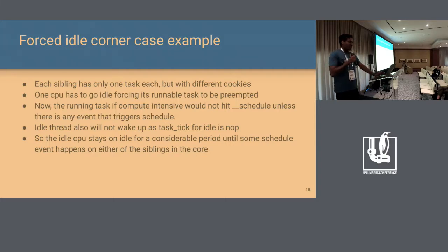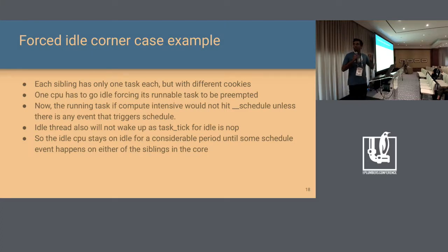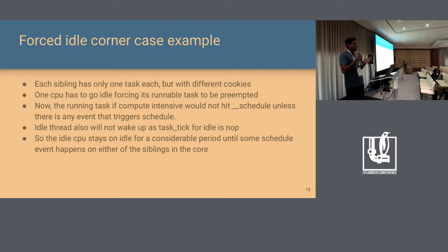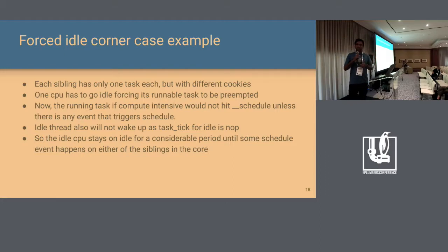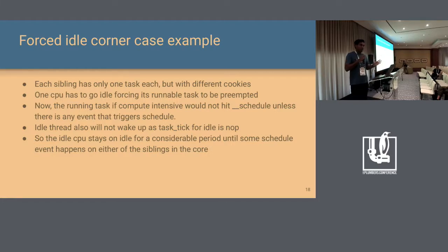Regarding force idle, consider two CPUs each with only one task, where task A is compute-intensive. CPU2 goes forced idle and CPU1 continuously executes its only task. CPU1 never triggers a schedule because it has only one task. CPU2 never schedules because the scheduler thinks it's idle — even though it has been forced idle. So CPU2 remains forced idle for a long time.